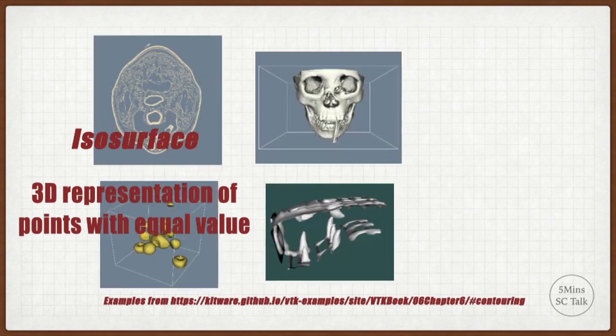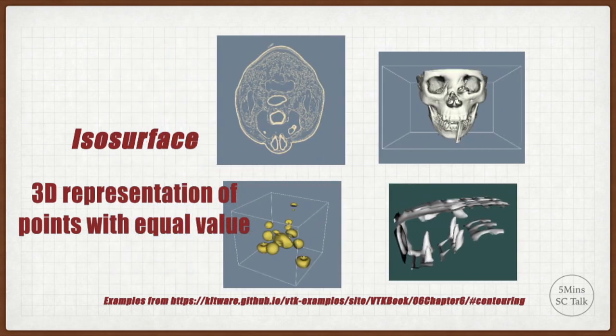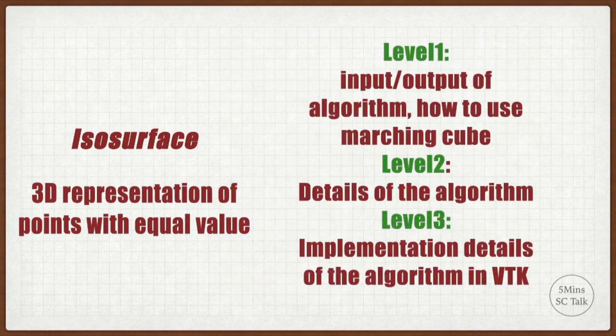Isosurface might be one of the most common algorithms for analyzing scientific data. In this video, we try to decompose it into multiple levels to explain how to understand and use the Marching Cube algorithm to achieve the isosurface step-by-step. Specifically, we will go through every step of the Marching Cube algorithm, and we will also use VTK at the implementation laboratory to understand the details of the Marching Cube algorithm.